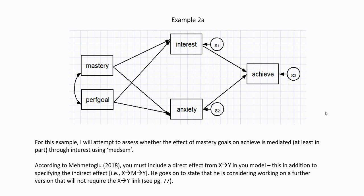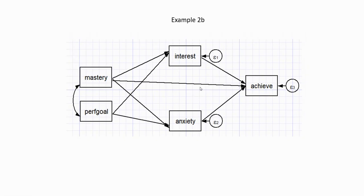Now let's consider a second example — I'm breaking this into example 2a and 2b. In this example we have the effect of mastery and performance goals on achievement flowing through two mediators, so we have parallel mediation being modeled. When I run this using SEM it runs fine, but if I want to test the specific indirect effect of mastery on achievement through interest, the package will break down. The reason is that it requires a direct effect of mastery on achievement, which I did not include in this model.